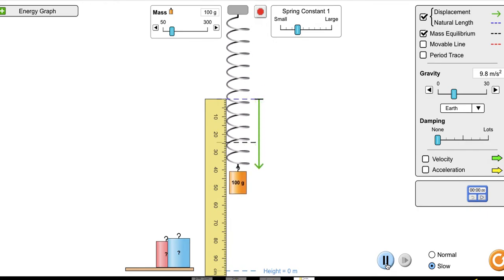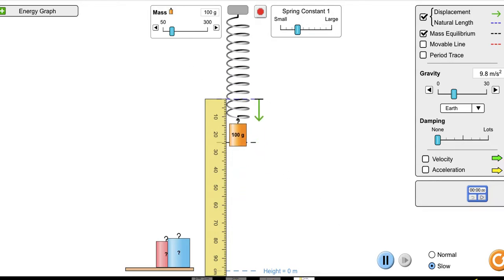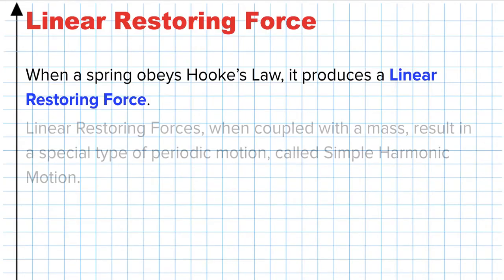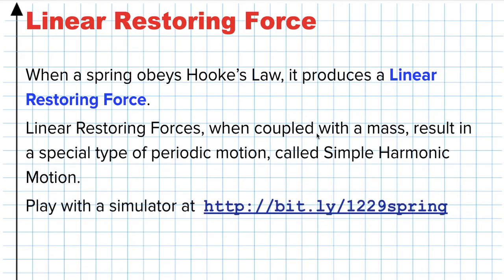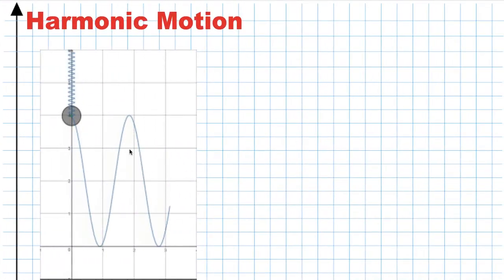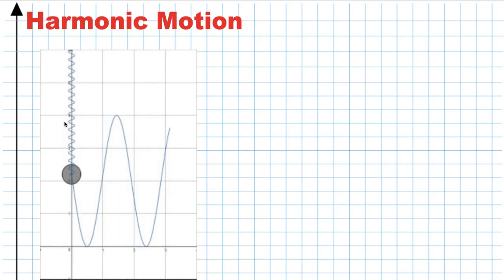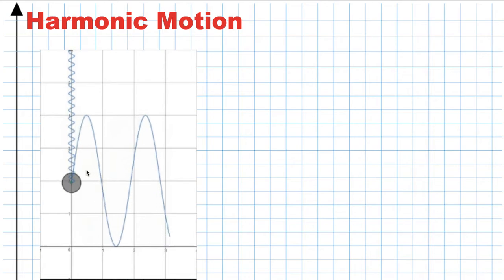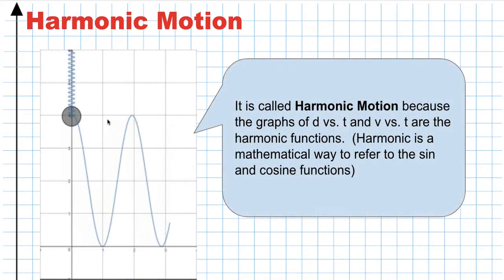It becomes an oscillating system that exhibits periodic motion, and we're going to find the period of that motion. When you have a linear restoring force coupled with a mass and you disturb it, you get what is called simple harmonic motion. It's called simple harmonic motion because if you graph its motion as it goes up and down, it produces sine waves or cosine waves.